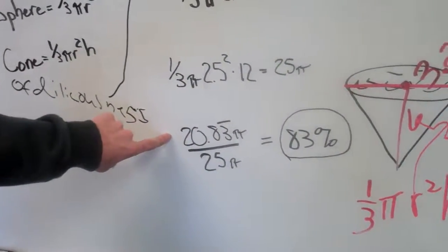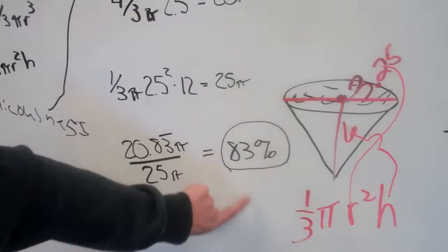Now you put 20.83 pi over 25 pi and you get 83 percent.